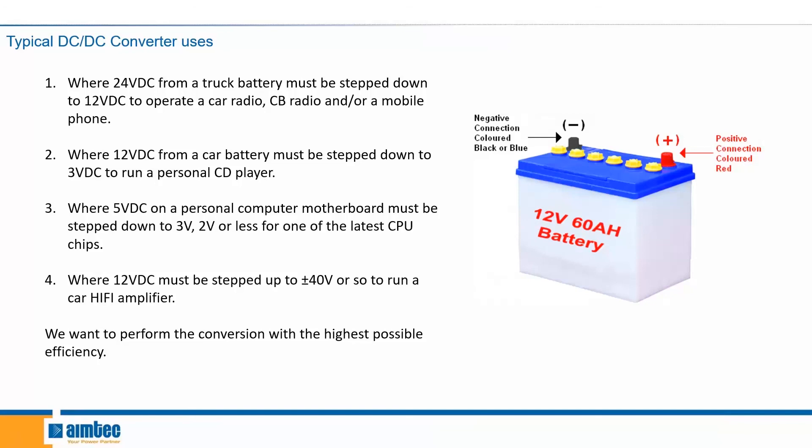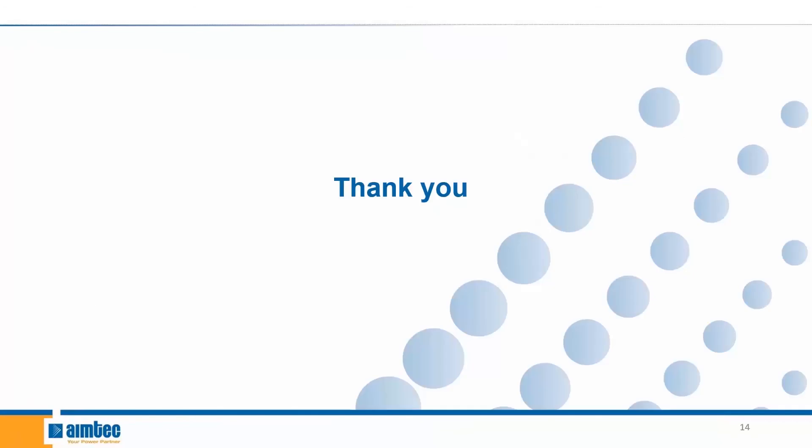When performing these conversions — for example from 12 to 3 volts — we want the highest possible efficiency. The lower the efficiency, the more power we lose and the more heat gets dissipated. We hope you learned something and we'll see you in the next one.